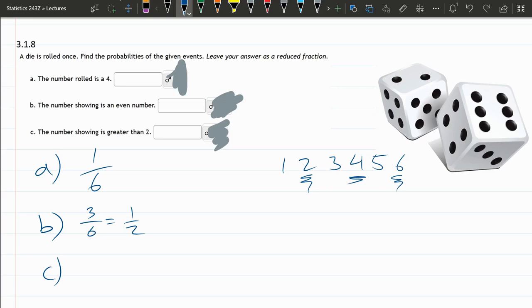Part C, the number showing is greater than 2, so we're going to have a different set of favorables. 2 is not greater than 2, 2 is equal to 2, but 3, 4, 5, and 6 are greater than 2. So, there's 4 favorables, 6 total. We could reduce to 2 thirds. And that should be all of our answers here.